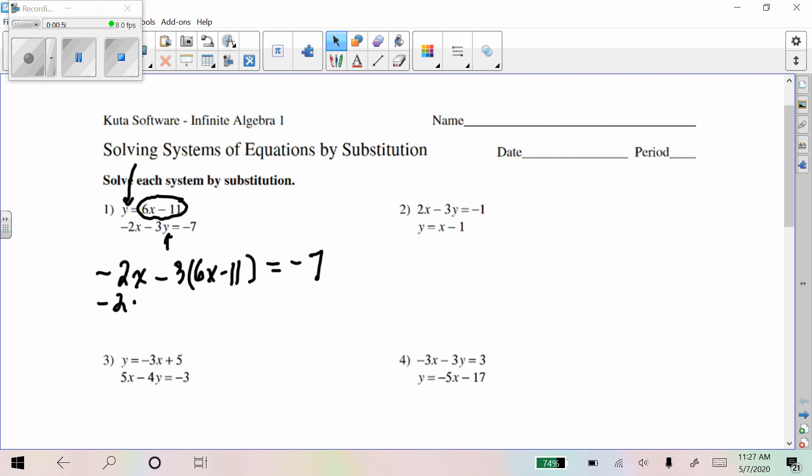And I'm going to simplify all of this using the distributive property here. Combine like terms, the negative 2x and the negative 18x makes negative 20x. And the rest is just solving equations like you guys have been doing.